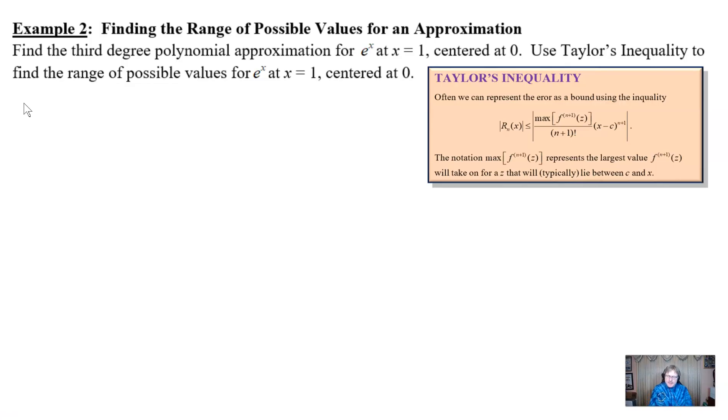Here is our problem. We're asked to find the third degree polynomial approximation for e to the x at x equal one centered at zero. And we're going to use Taylor's inequality to find the range of possible values for e to the x at x equal one. Now this is an unusual problem in that we're essentially asking you to figure out what is e to the first power. And I think you might have a little bit of knowledge about that, the 2.71, etc. But we're not going to rely on any kind of memorization of that. And we're going to work through the process and see what we've got.